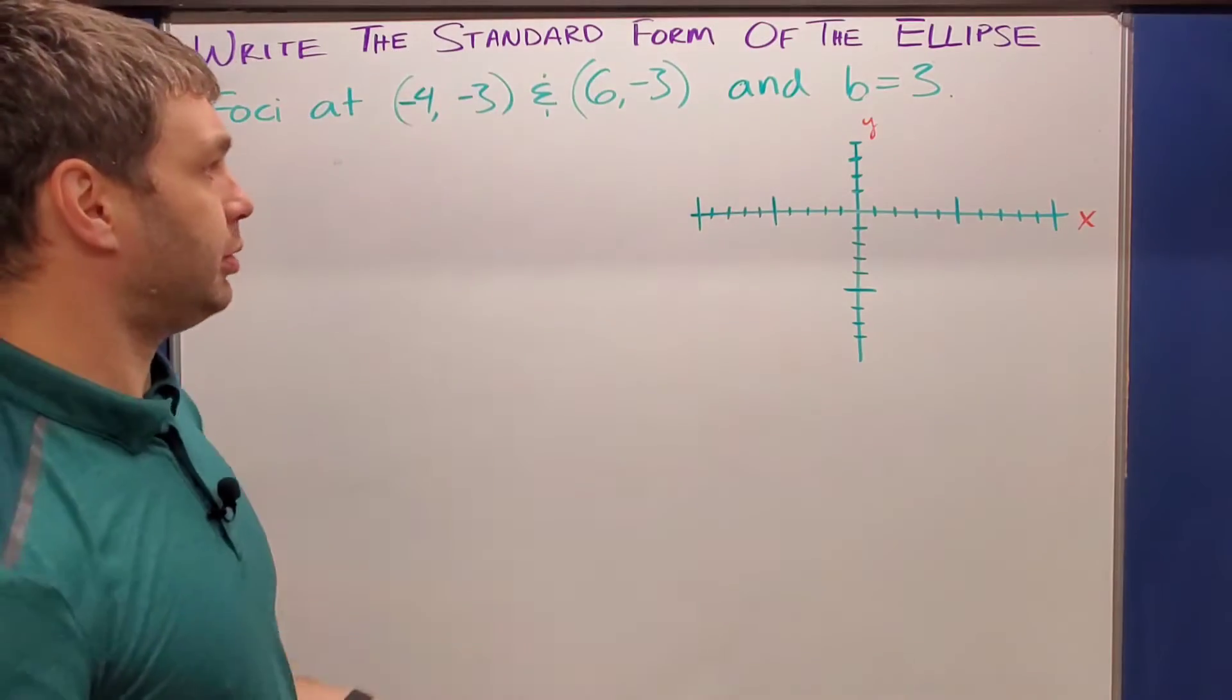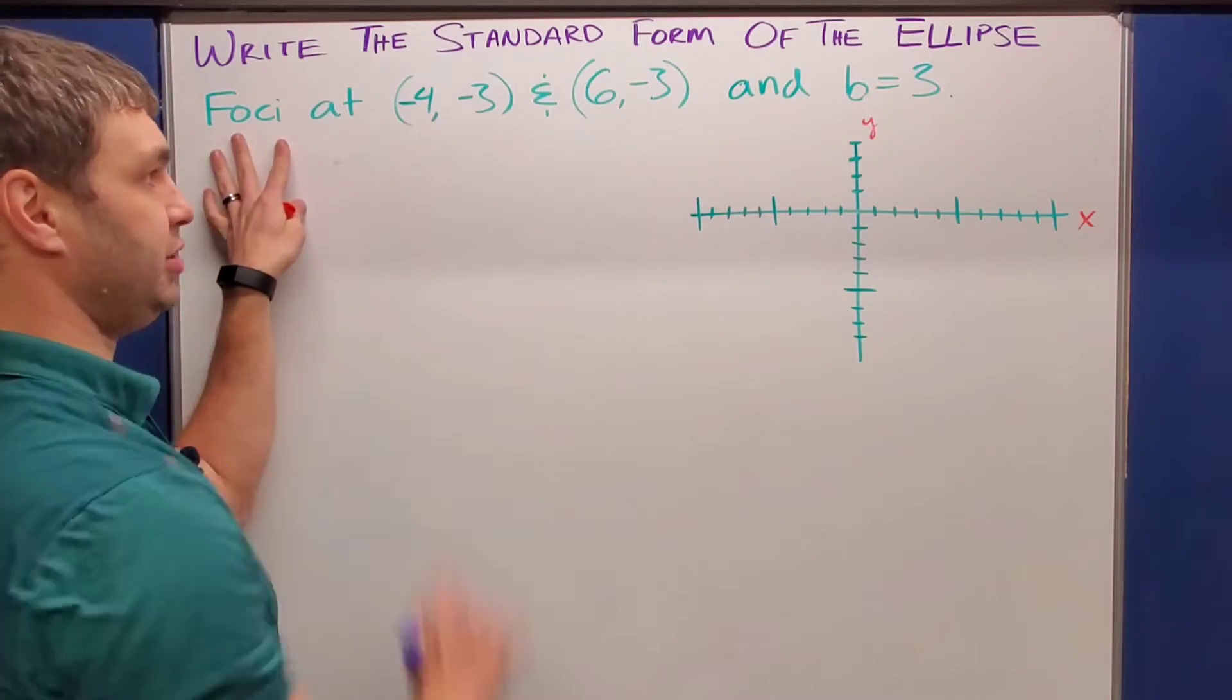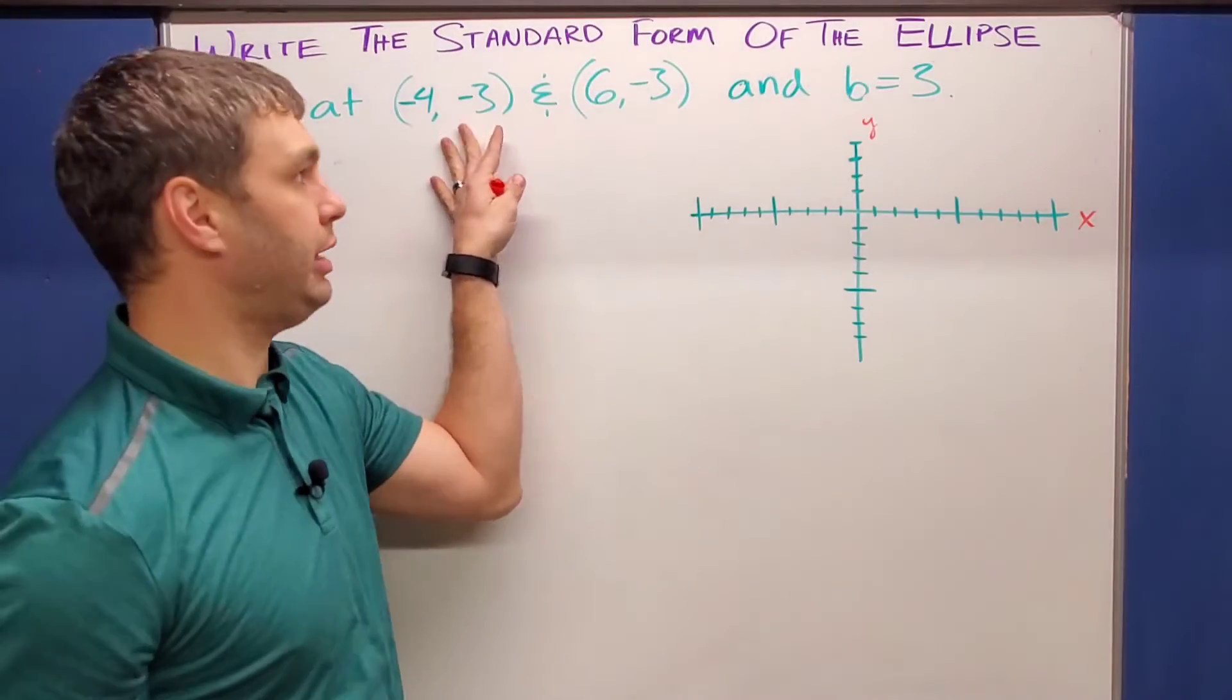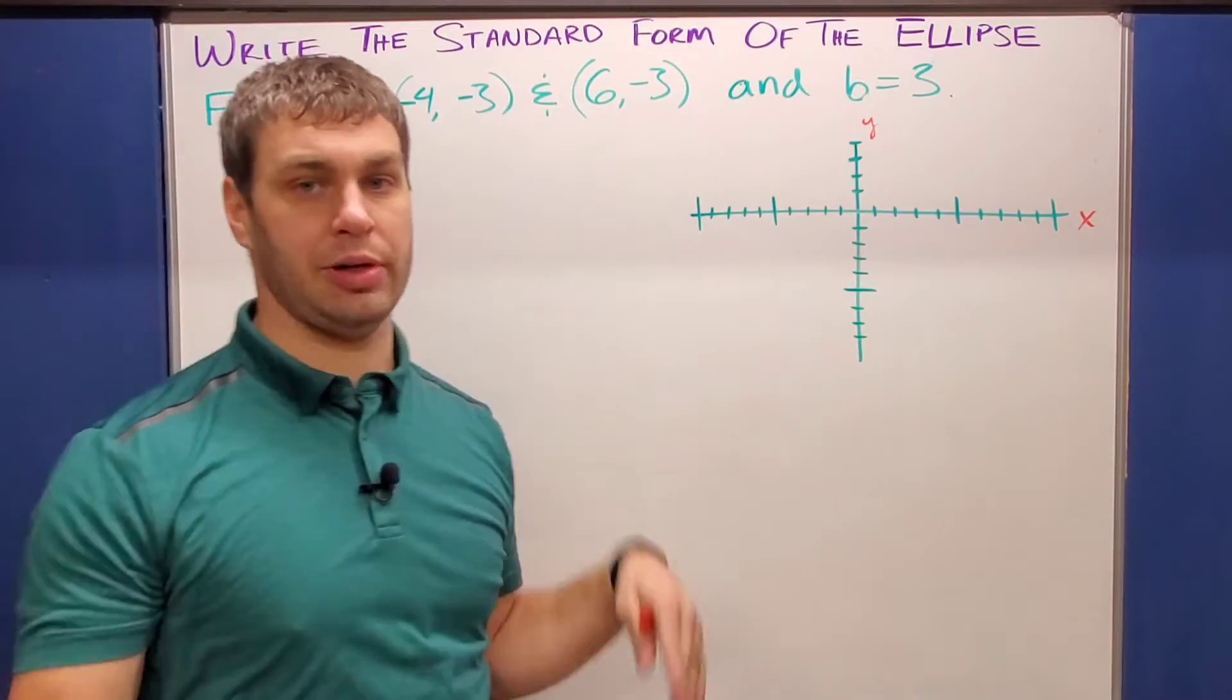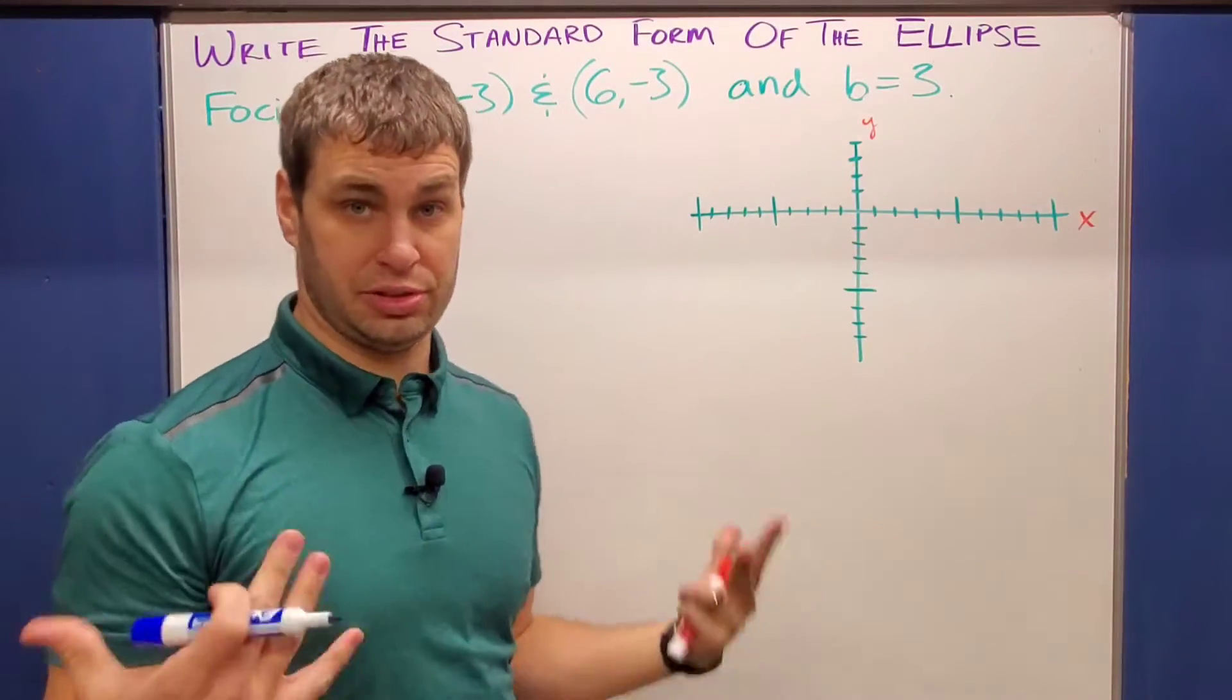This problem is asking us to write the standard form of this ellipse described as having two foci at negative four, negative three, six, negative three, and then also a b value of just three.